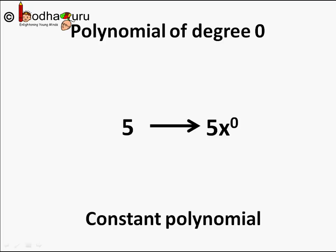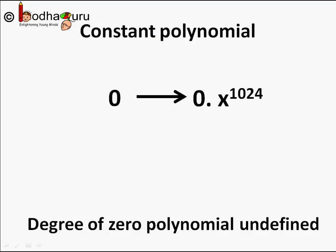Any non-zero number will have a degree 0. But what if the constant number is 0 itself? Then it is called the 0 polynomial. Now, the fun part is, 0 is a constant polynomial but its degree is undefined, because you can literally multiply a variable with any value in the exponent. Like 0 times x to the power 1024 is also 0. Should we say its degree is 1024? Or 0 can be represented as 0 times x to the power 50, which is also equal to 0. Should we say its degree is now 50? So there is no fixed degree for constant 0. So degree of 0 polynomial is undefined.